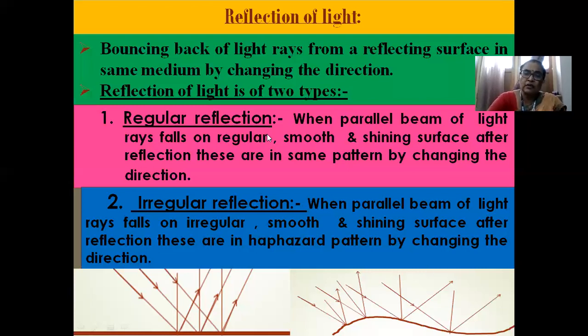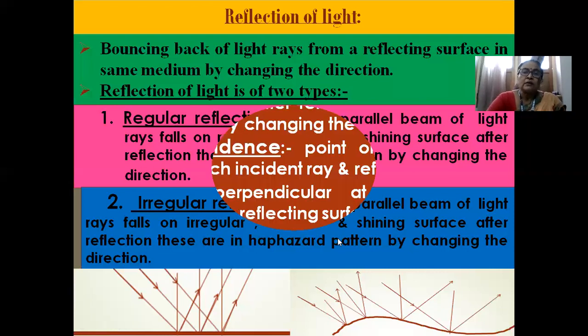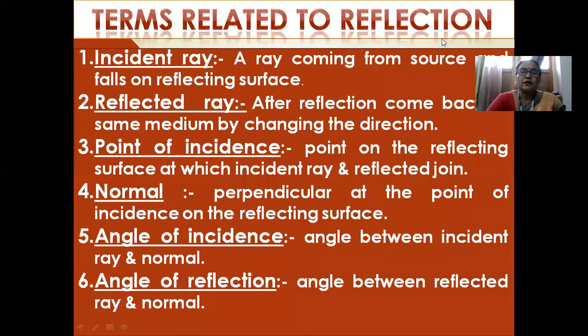So I think regular reflection is clear. Now let's say terms related to the reflection. Incident ray, a ray coming from the source and falls on the reflecting surface is called incident ray. Reflected ray, after reflection, come back in the same medium by changing the direction. And point of incidence, on the reflecting surface, a point where incident ray or reflected ray join.